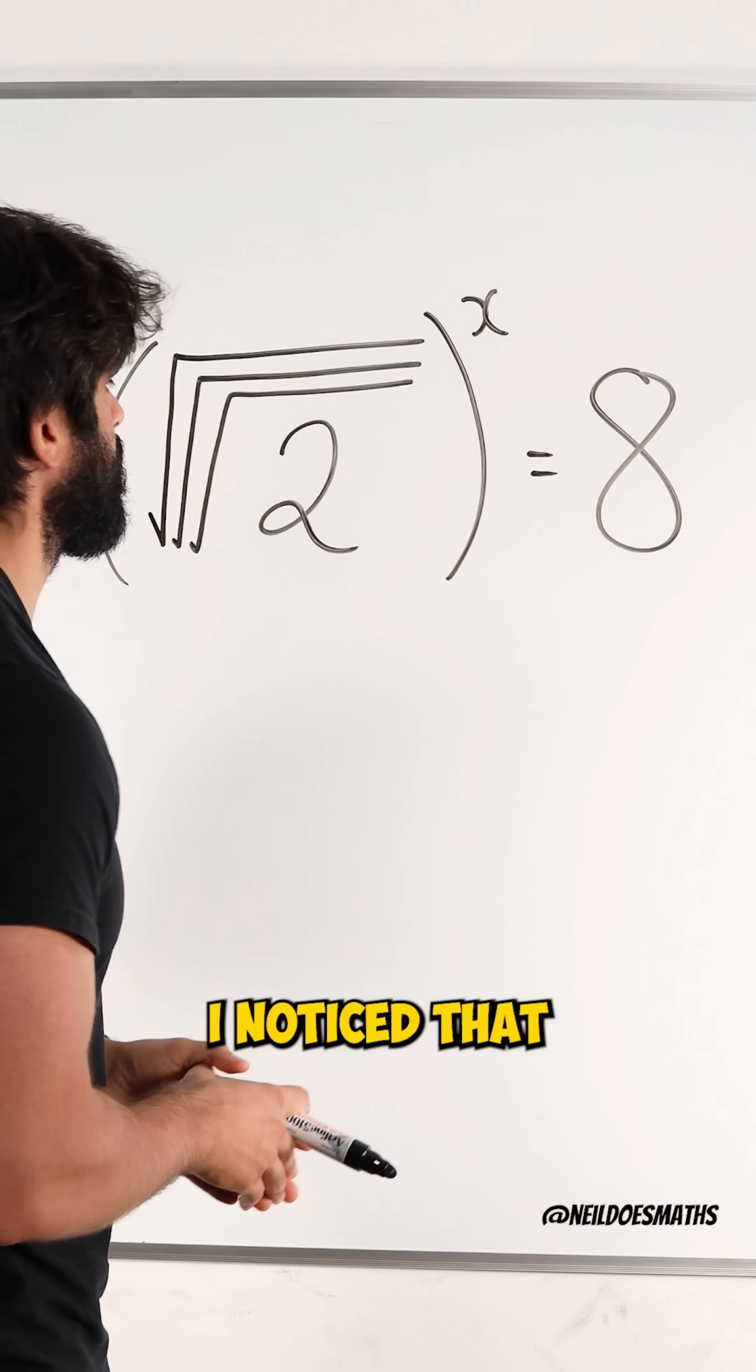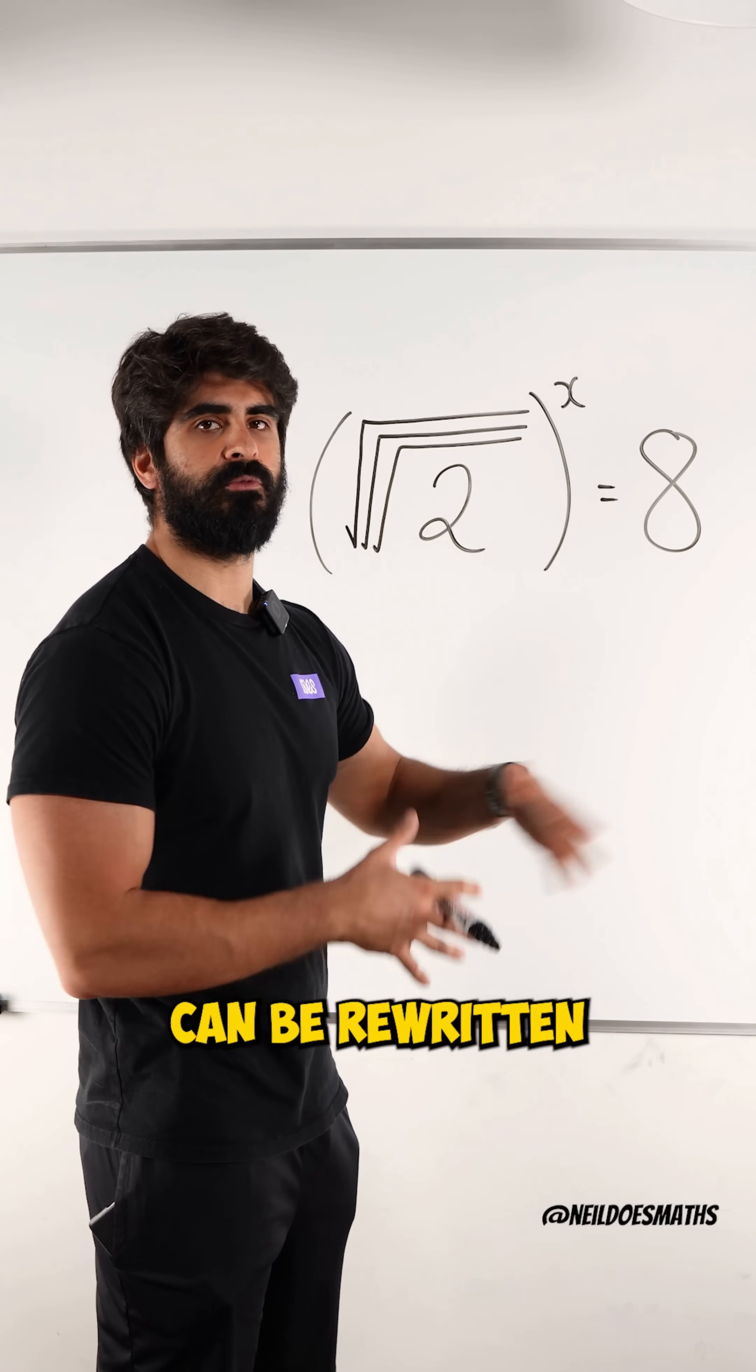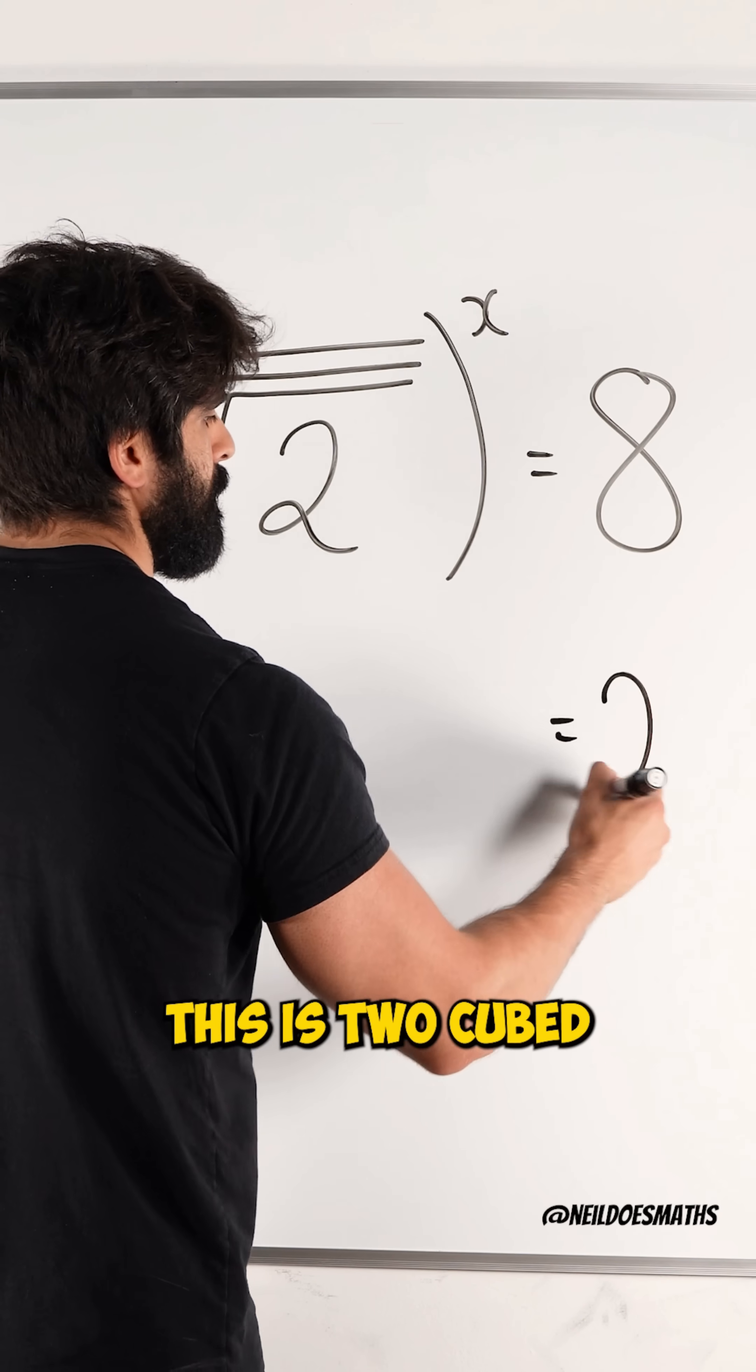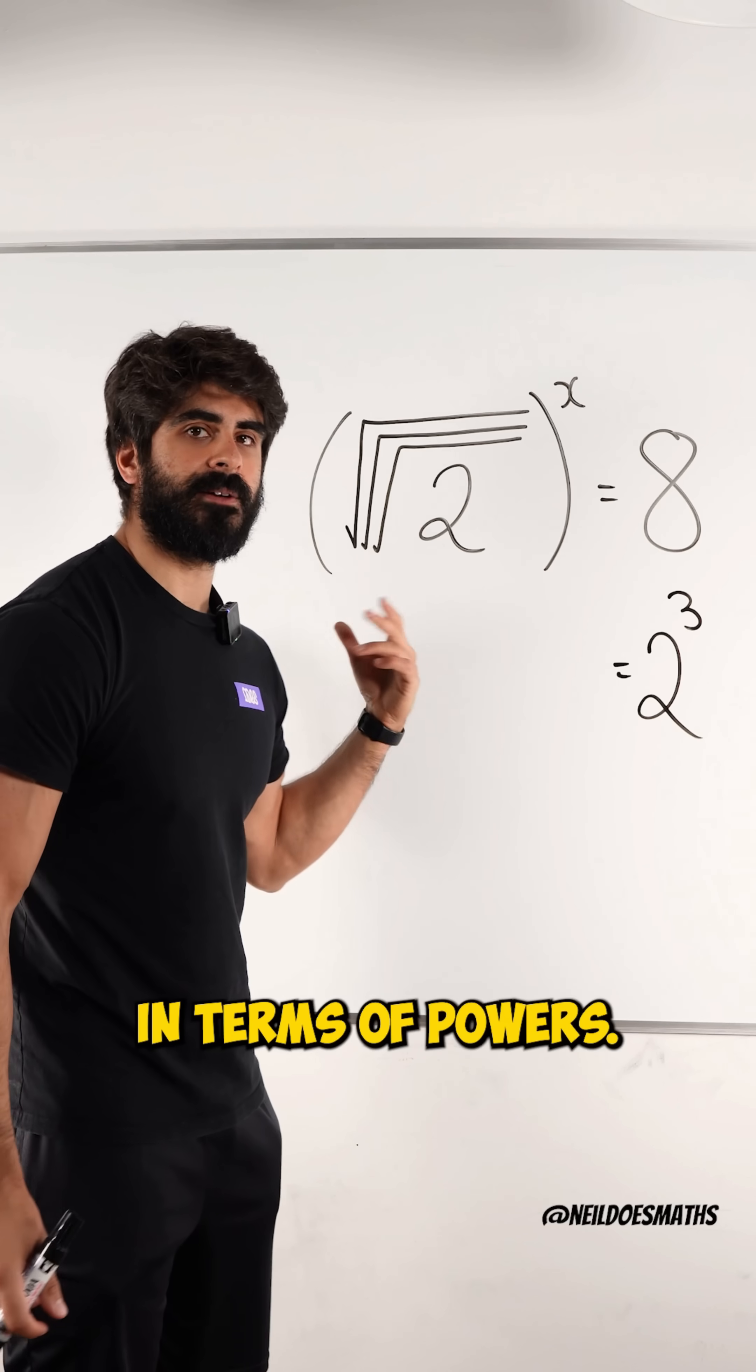Now, in order to do this problem, I noticed that 2 and 8 can be rewritten both as base 2, because I know this is 2 cubed. Now, here, I need to rewrite this in terms of powers.